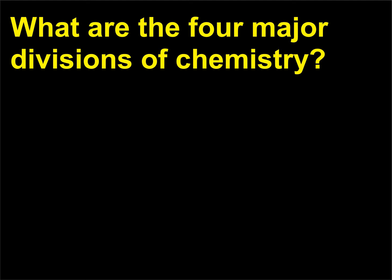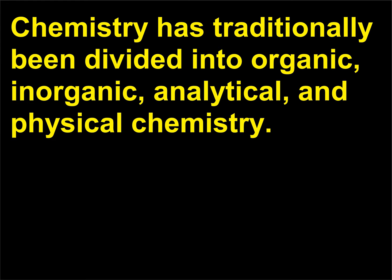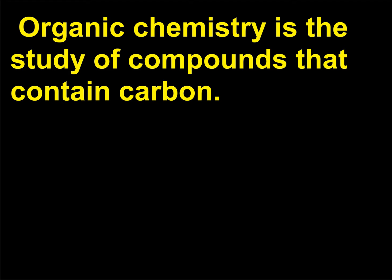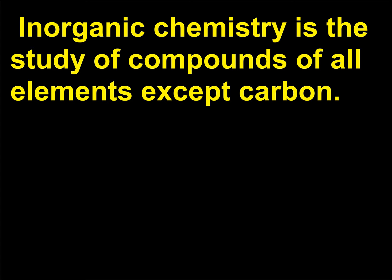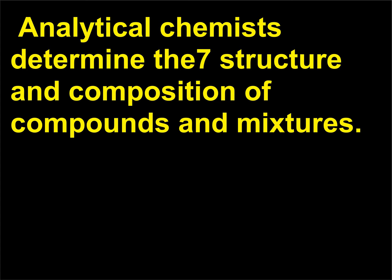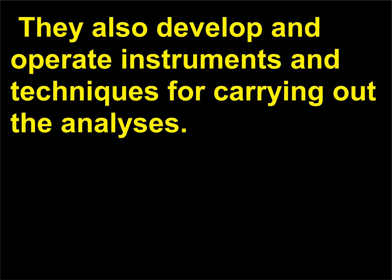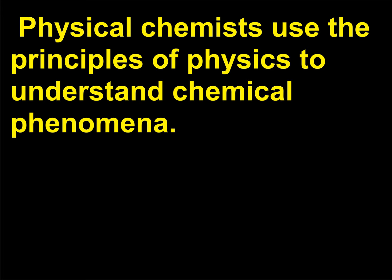What are the four major divisions of chemistry? Chemistry has traditionally been divided into organic, inorganic, analytical, and physical chemistry. Organic chemistry is the study of compounds that contain carbon — more than 90 percent of all known chemicals are organic. Inorganic chemistry is the study of compounds of all elements except carbon. Analytical chemists determine the structure and composition of compounds and mixtures, and develop and operate instruments and techniques for carrying out the analyses. Physical chemists use the principles of physics to understand chemical phenomena.